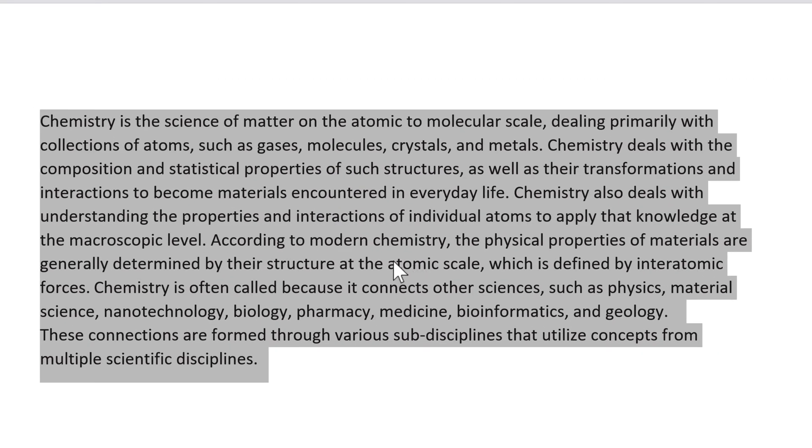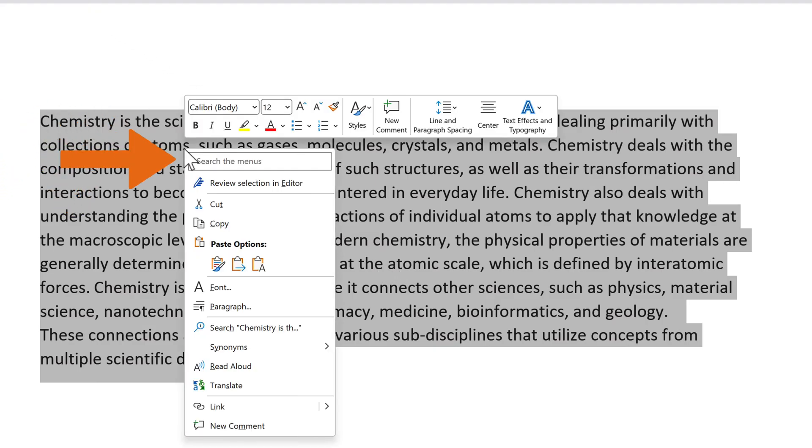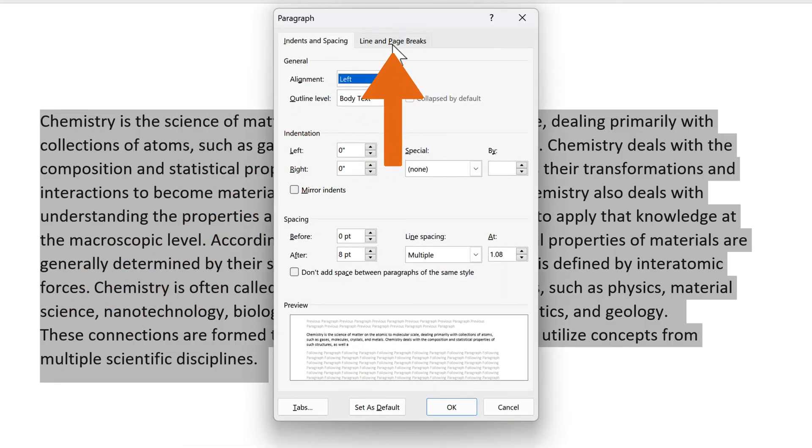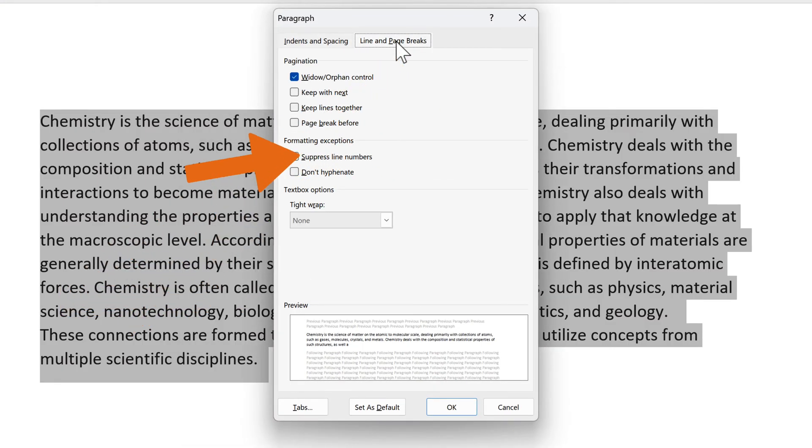An alternative way to apply hyphenation is to use the Paragraph dialog box. To access this, right-click on the selected text, choose Paragraph, and then click on the Line and Page Breaks tab. Under Formatting Exceptions, you can choose to enable or disable hyphenation by ticking or unticking the Don't Hyphenate option.